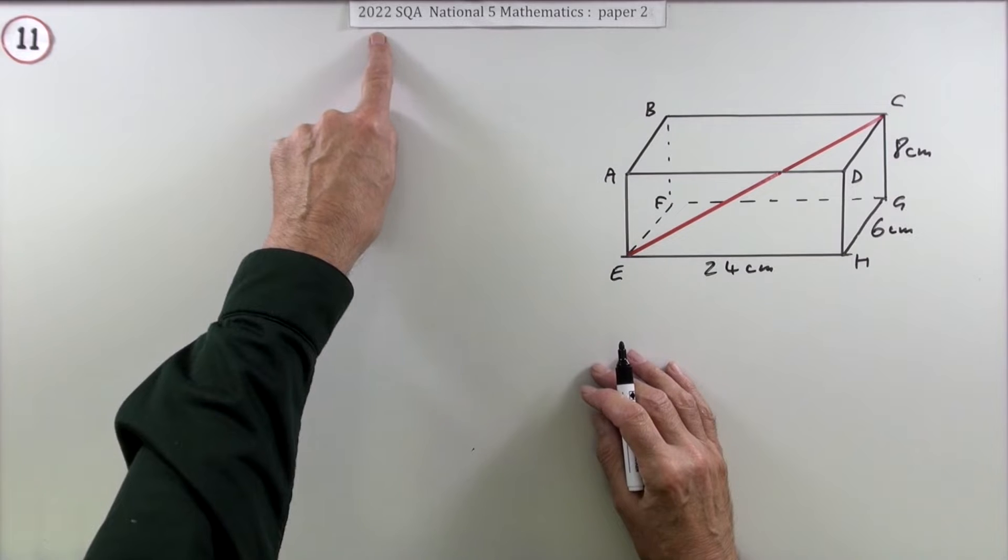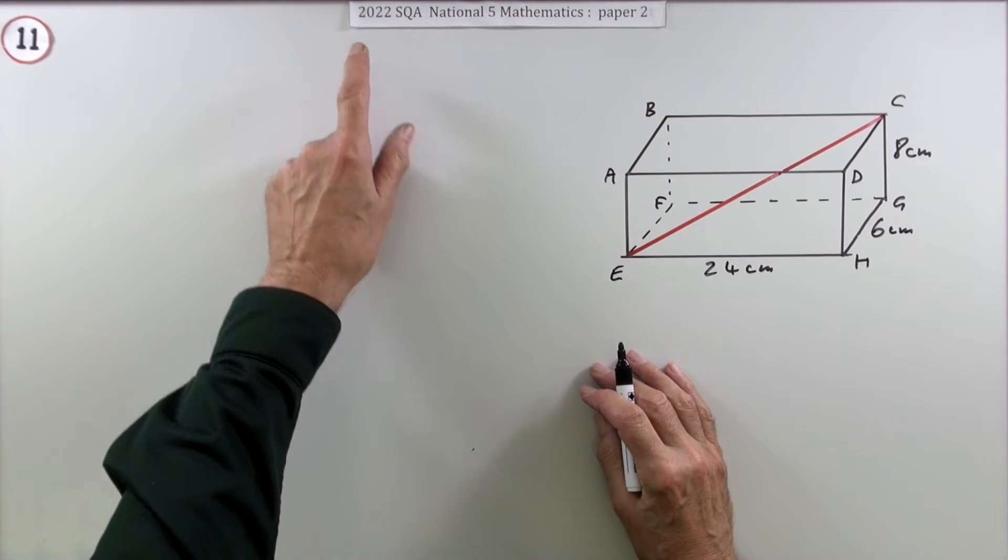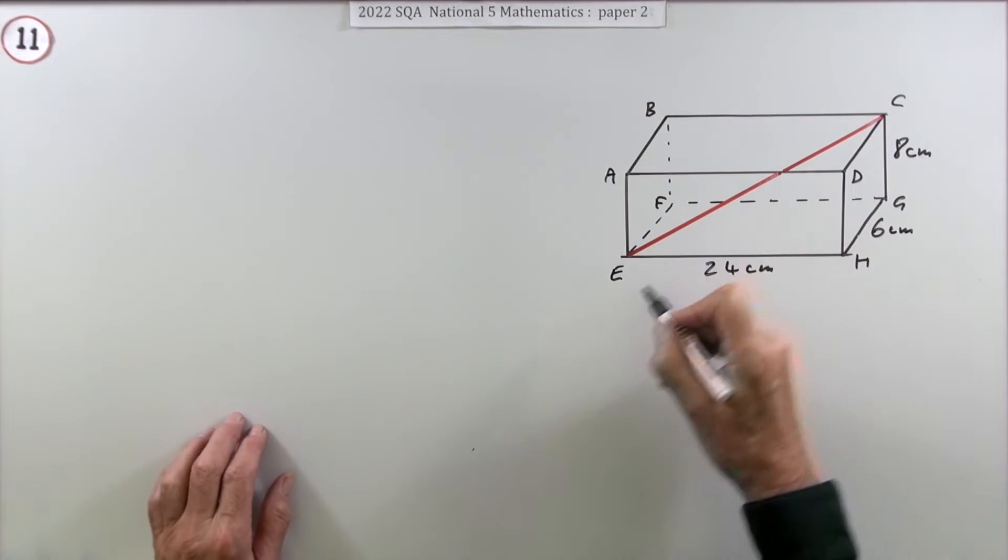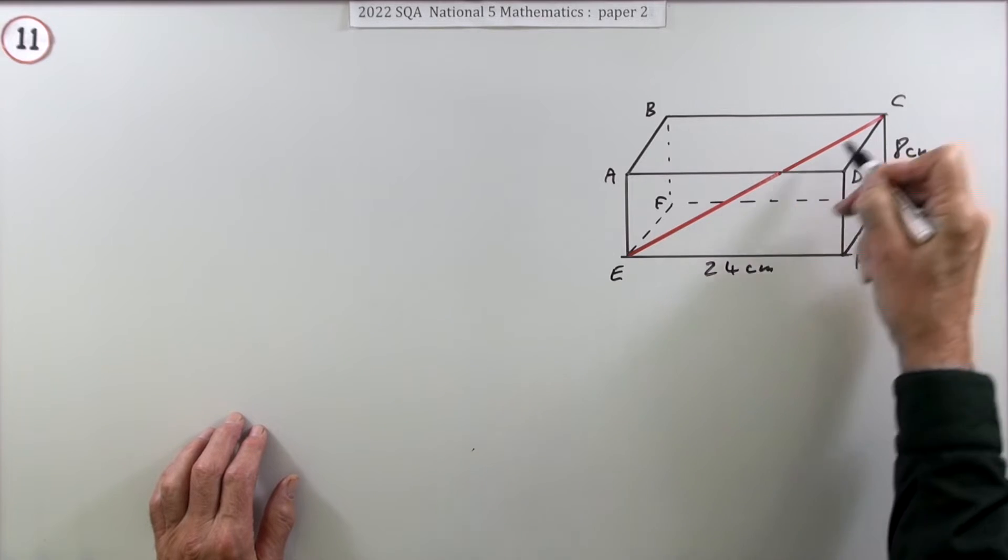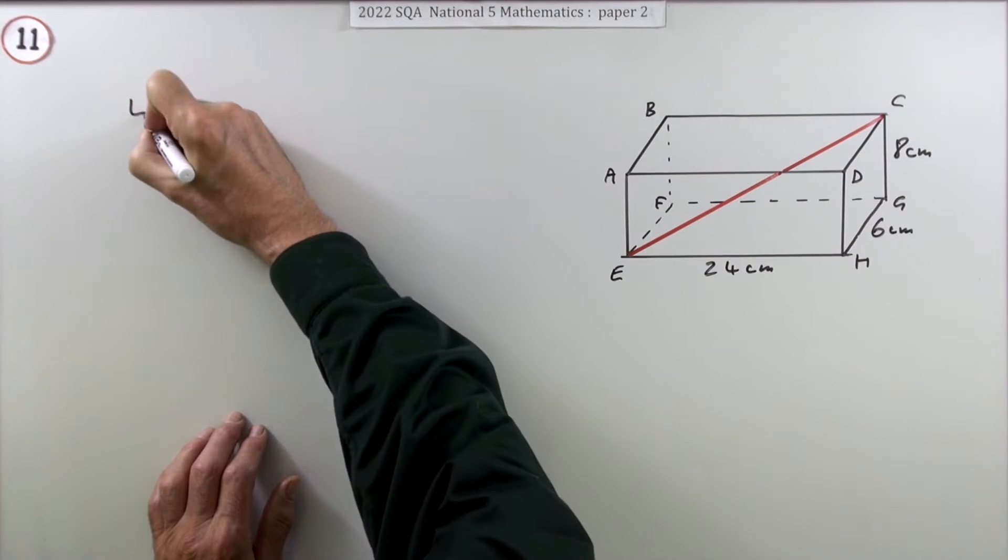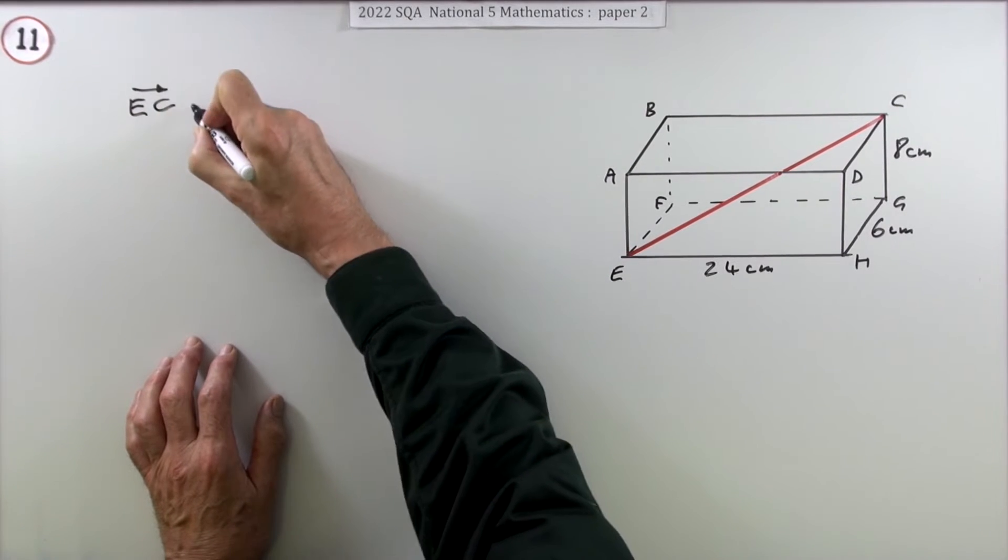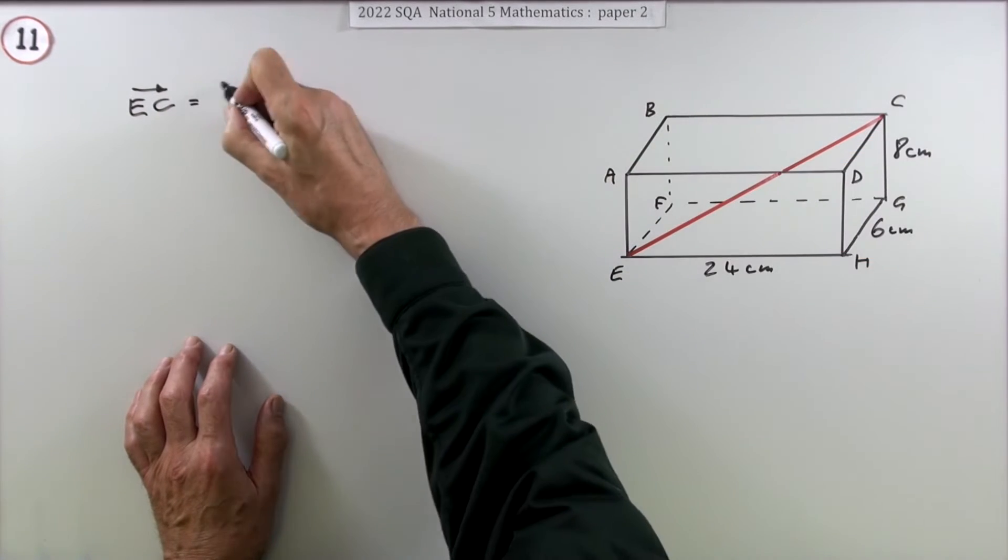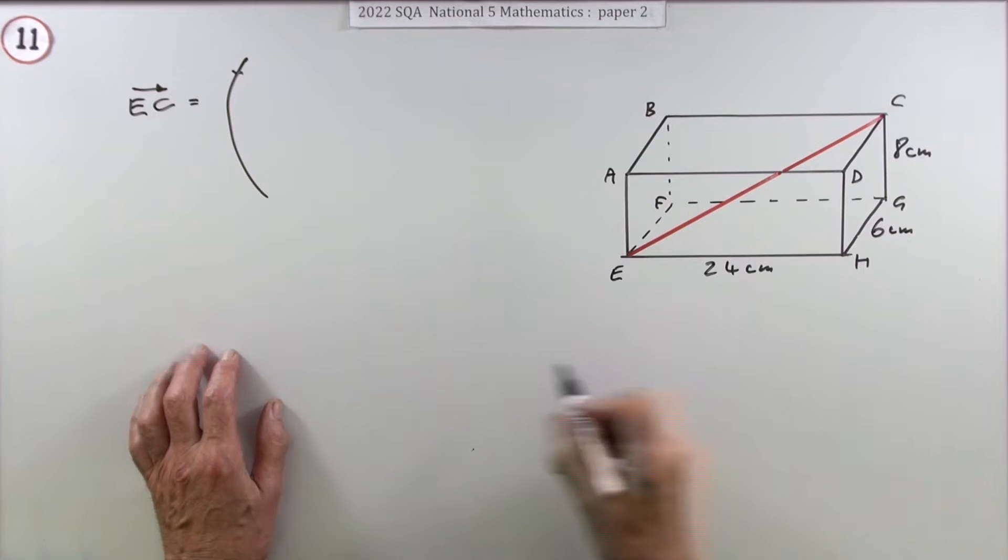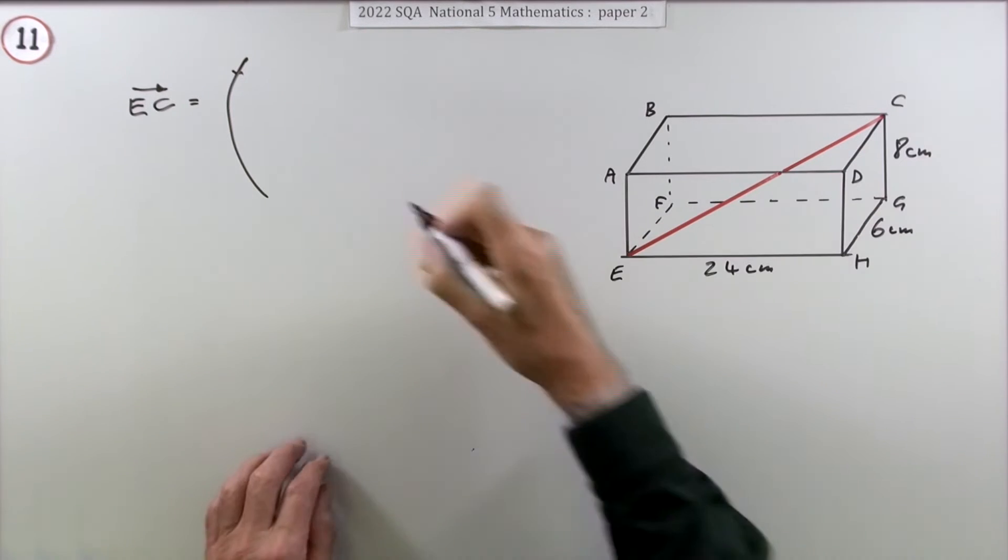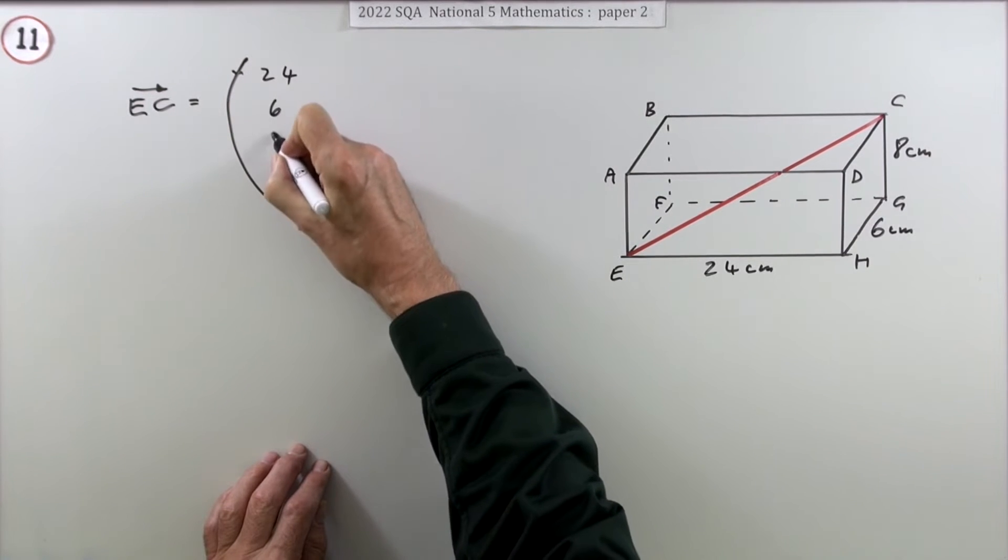The way you put down the answers this year will be affected by the fact that vectors have been missed out this year. Otherwise, you could just have said, if you want the length of that line EC, you could have stated the components of the vector EC just by saying it goes 24 along, 6 back, and 8 up: 24, 6, 8, because that would have been the first mark.